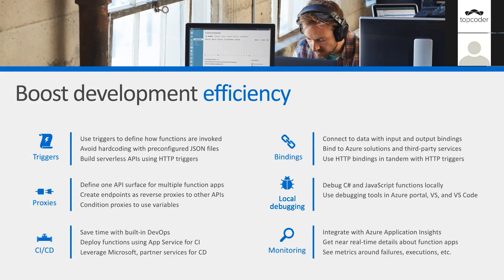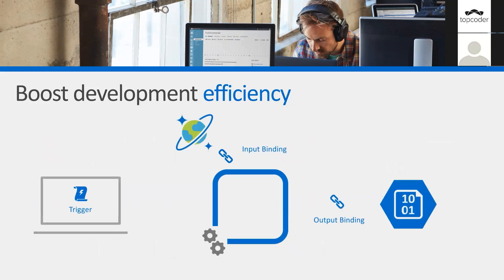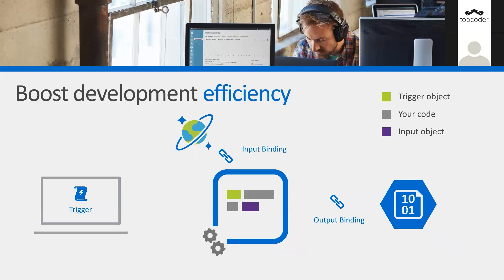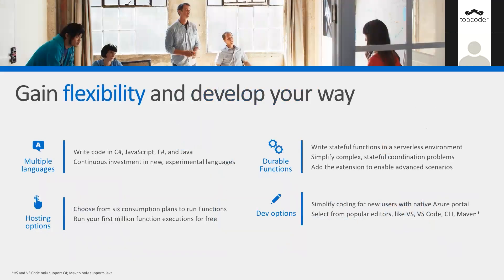You can debug locally using VS Code and other things, and there is monitoring capability for your function as well. The architecture is: you do a trigger through an HTTP trigger, there is a function running it, there is an input binding where you call the data, and then there is an output binding which can be an Azure service or an external service.